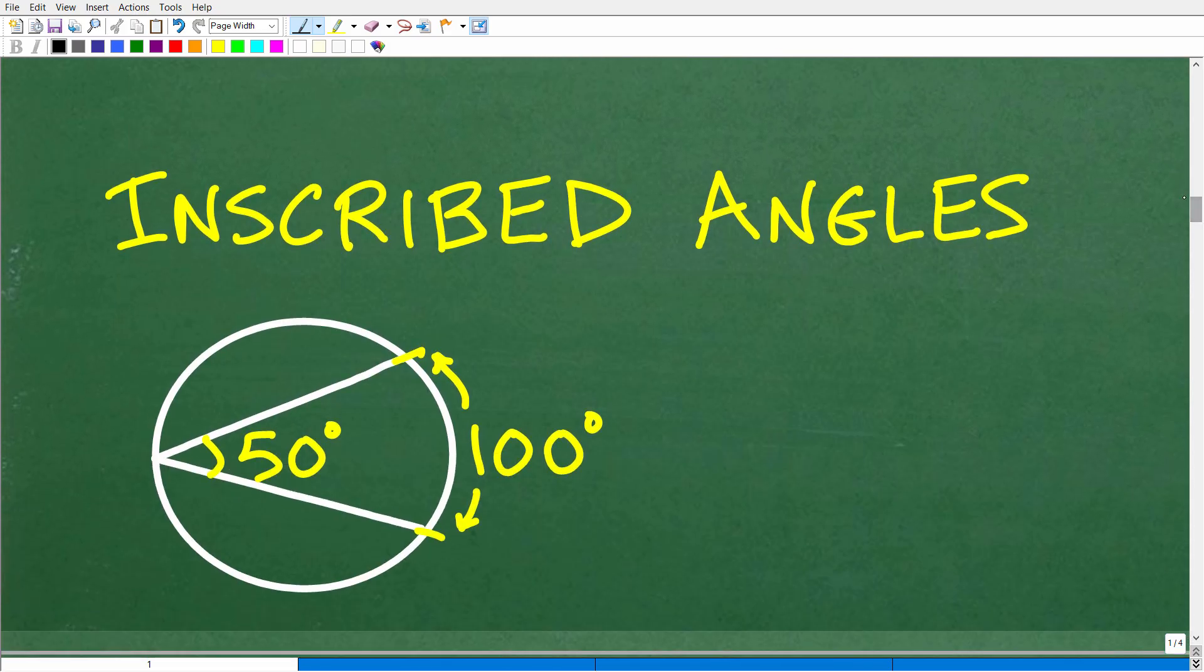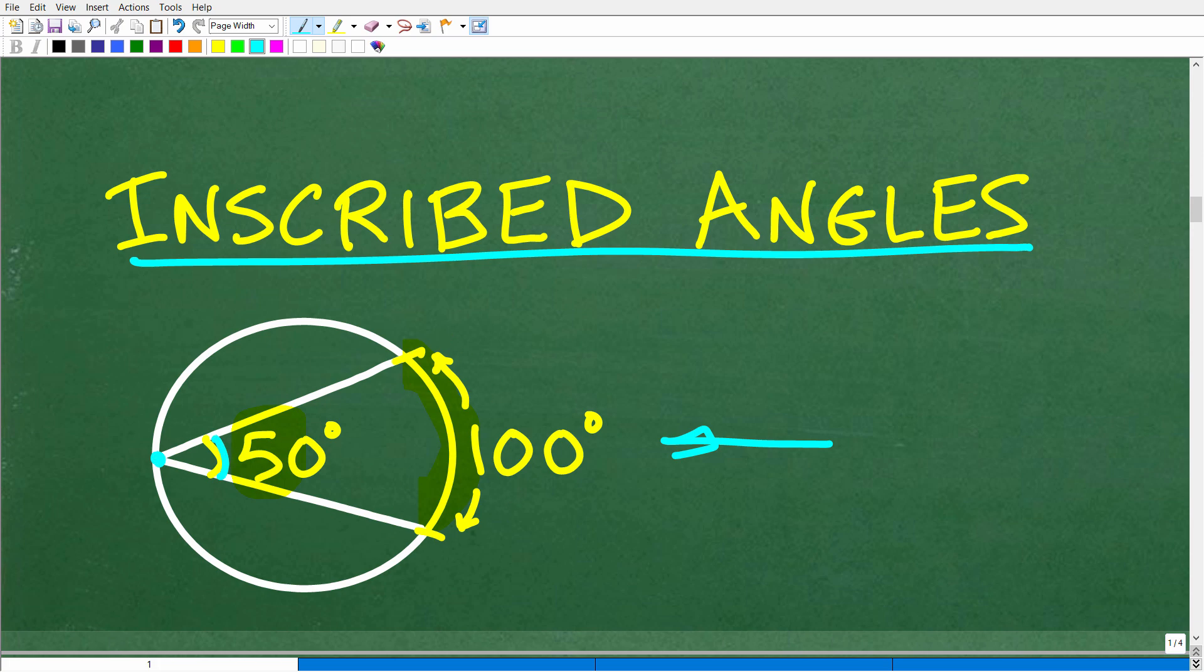We can figure a few things out about inscribed angles if we know a simple relationship. Let's take a look at that relationship. An inscribed angle in a circle has the following relationship: it looks like the arc formed by this triangle—the angle is one half the arc formed by the triangle. We have an inscribed angle, and the angle is half of the arc, or the arc is double the angle.